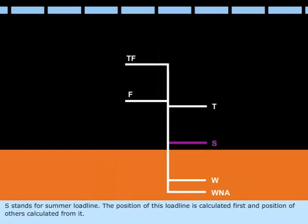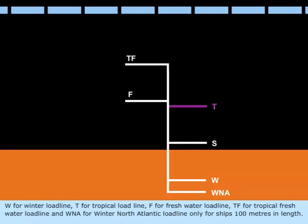S stands for summer load line. The position of this load line is calculated first and position of others calculated from it. W for winter load line, T for tropical load line, F for freshwater load line, TF for tropical freshwater load line, and WNA for winter North Atlantic load line, only for ships 100 meters in length.